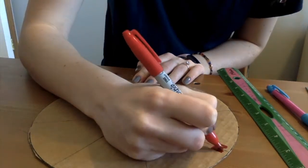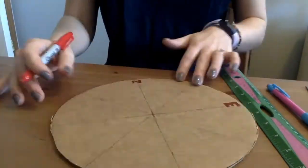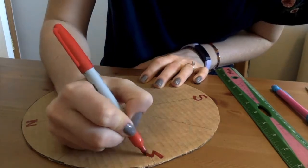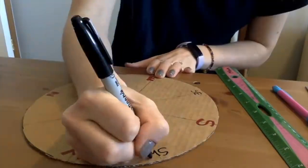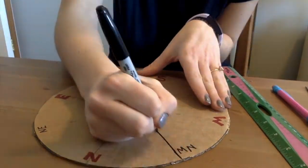We will finish our base by labeling each segment with the cardinal directions. So the cardinal directions are north, south, east and west and the directions in between are northeast, southeast, southwest and northwest.